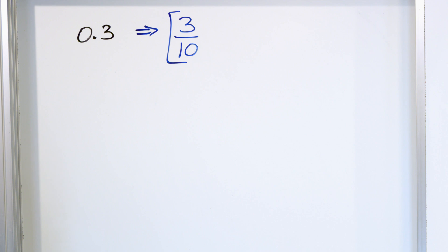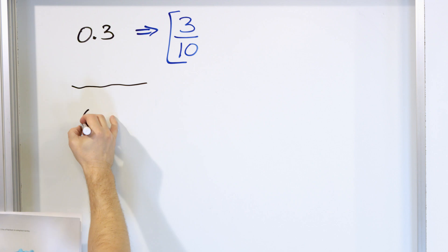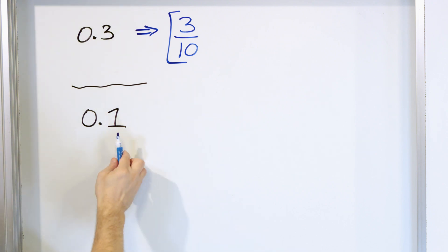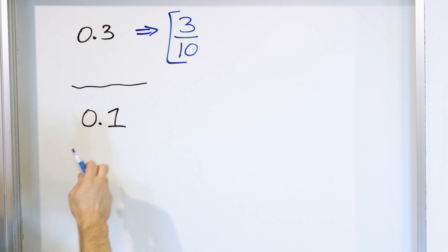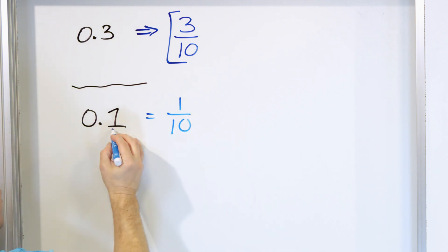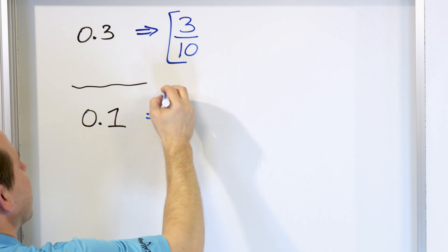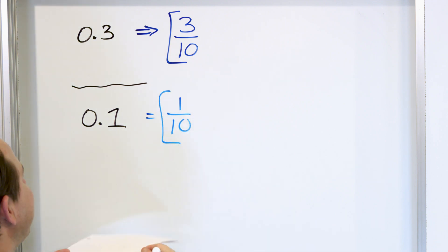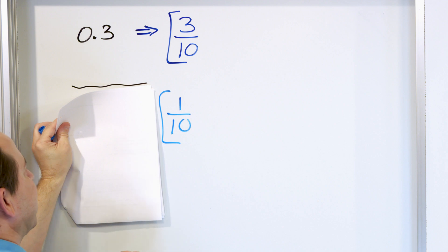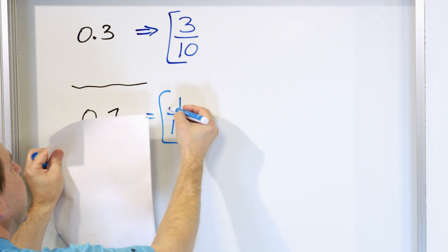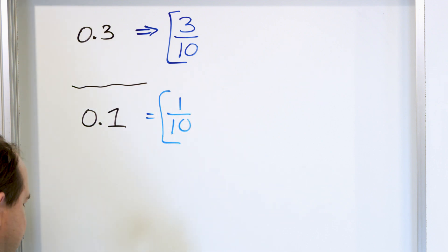Let's take a look at problem number two: convert the decimal 0.1 into a fraction. This is in the tenths place, so what does it mean to have 0.1? I have one slice worth a tenth, so I have one tenth. The one goes on top and it's in the tenths place. I cannot simplify this anymore, so the answer is one tenth. If I gave you this fraction and said convert it to a decimal, you would divide — the decimal is invisible here — and move it by dividing by ten to get 0.1. That's what we started with.